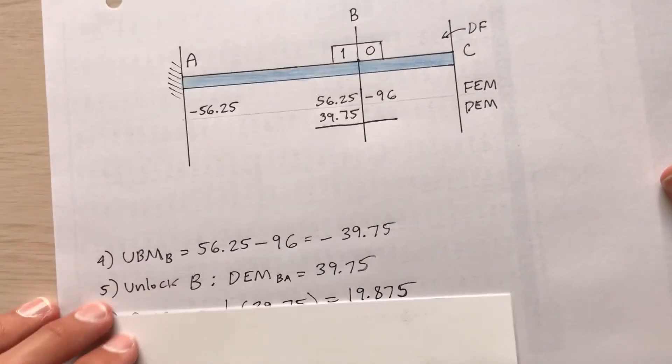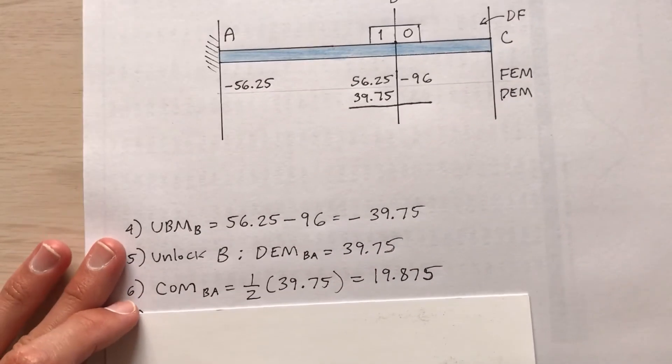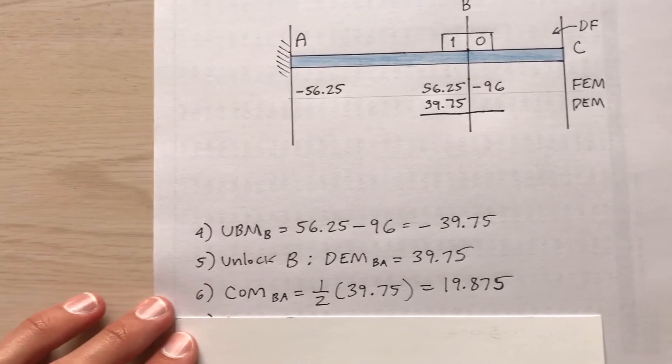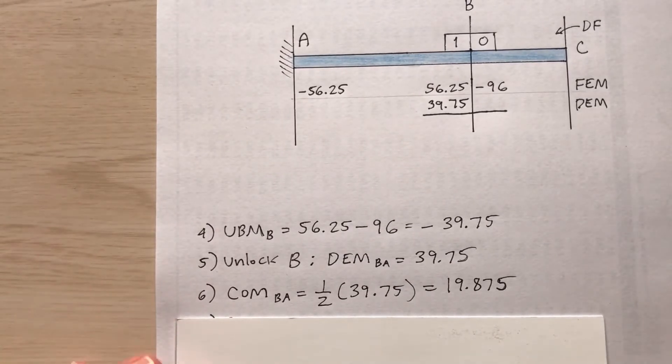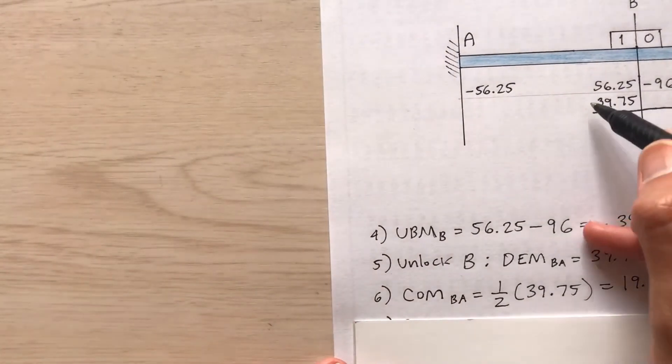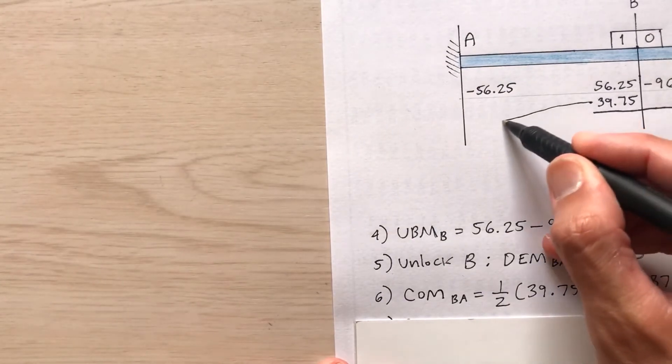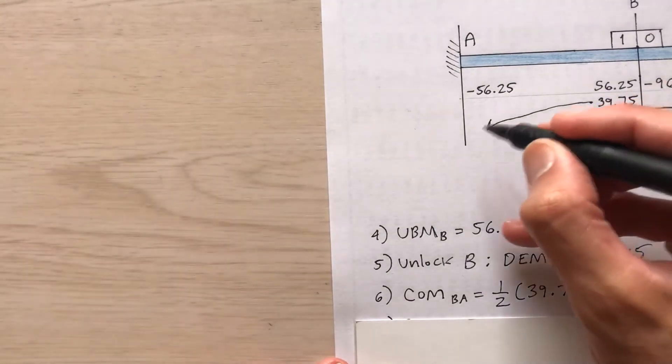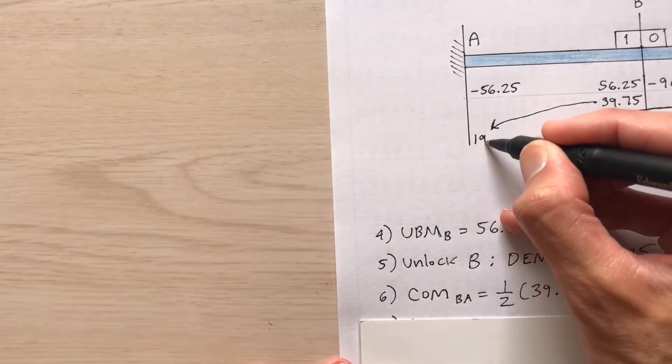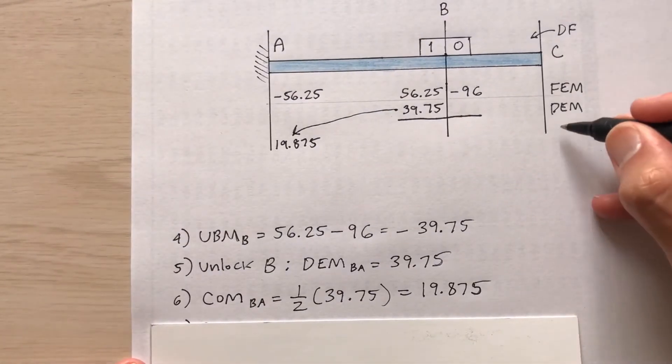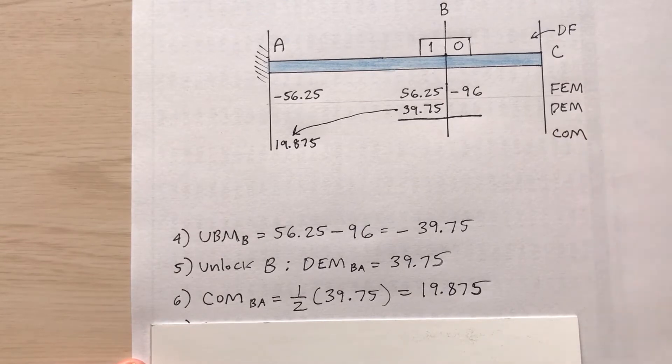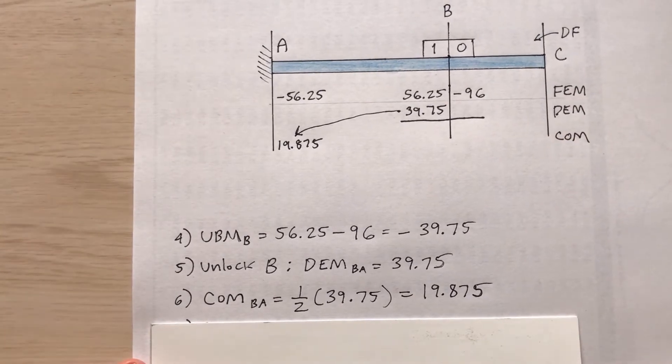Step six, carry over a moment. Half of that. So a half of 39.75, 19.875. So take half of this over here. 19.875. That is the carry over moment. So that's step six.